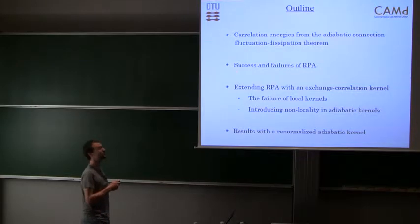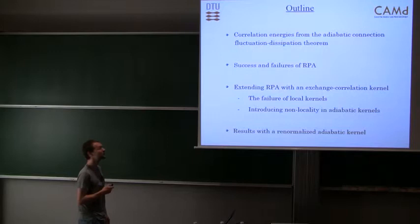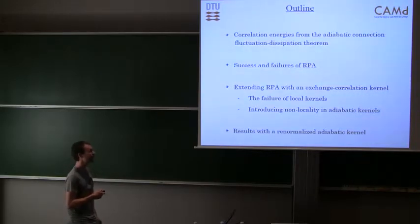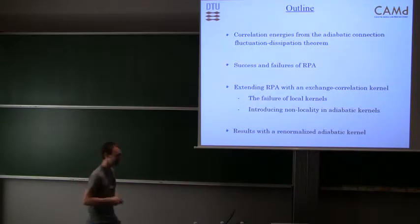I'll start by very briefly introducing how we can get these correlation energies from the adiabatic connection fluctuation dissipation theory, and then discuss some different features about RPA. I will probably tend to focus on the failures because we're interested in improving upon RPA. To do this we use time-dependent density functional theory. It turns out that you cannot use a local adiabatic kernel for this, so we have to introduce non-locality in these kernels.